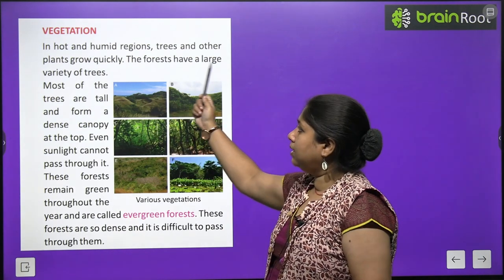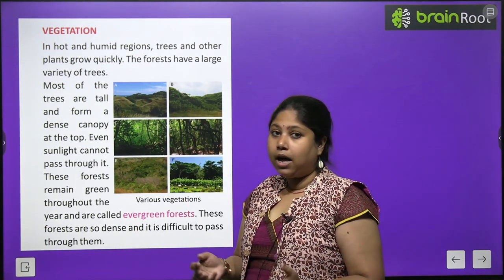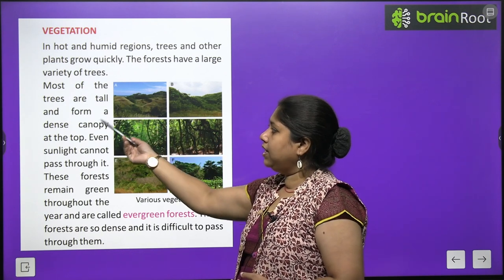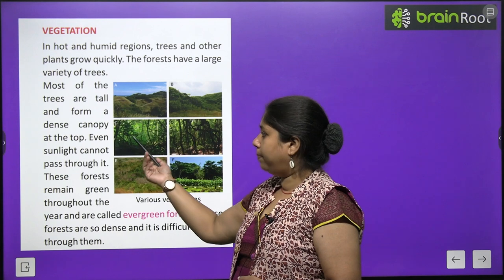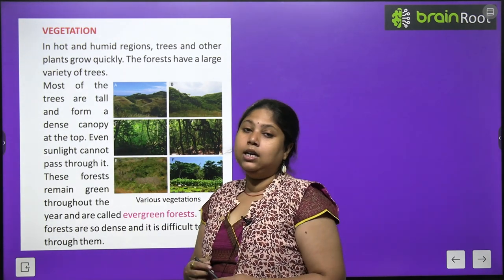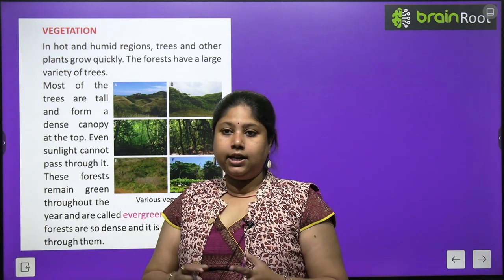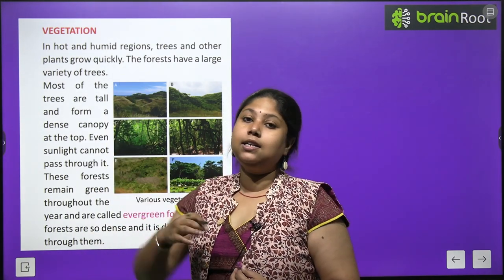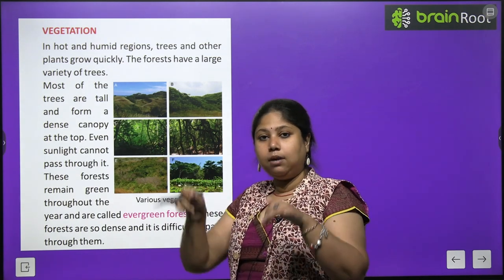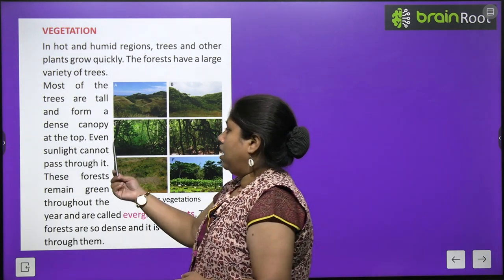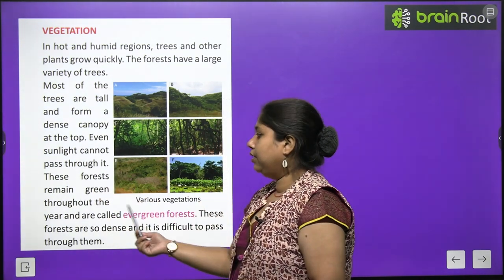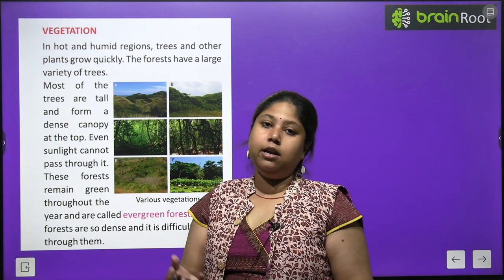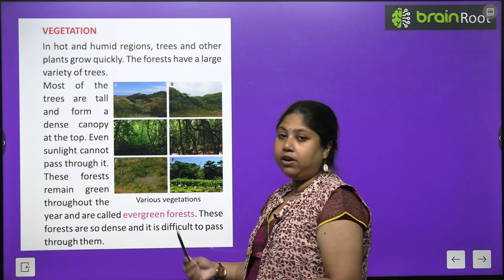In hot and humid regions, trees and other plants grow quickly and very naturally because rainfall is very good here. The forests have a large variety of trees. Most of the trees are tall and form a dense canopy at the top — even sunlight cannot pass through it. The trees are so dense that they form a complete web-like structure, and sunlight cannot penetrate inside these forests. These forests remain green throughout the year and are called evergreen forests, because it rains throughout the year, the trees stay fresh and green.